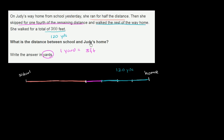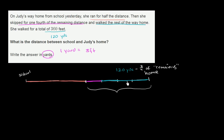What is the distance between school and Judy's home? The blue walking section is 3/4 of the remaining distance after running. So 120 yards equals 3/4 of the remaining distance. Since 120 yards is 3/4, then 1/4 is 1/3 of 120, which is 40. So each fourth is 40 yards — 40, 40, 40 adds up to 120. The remaining distance is 40 times 4, or 160 yards.